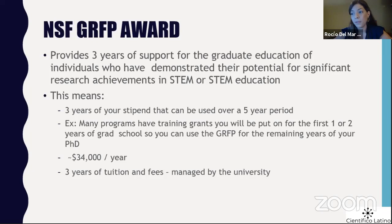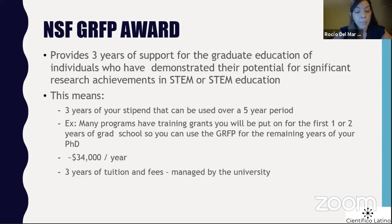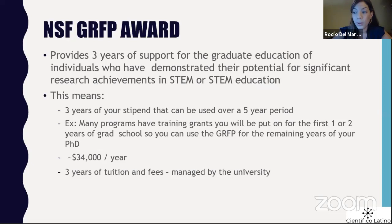The stipend for the NSF-GRFP is $34,000 a year. Depending on where you're doing grad school, that can be more or less than what your peers receive. Usually graduate schools match it — if $34,000 is less than what peers are receiving, they compensate you to be equal. Some institutions even give you a bonus for getting an external fellowship. For the three years you have funding, they also cover your tuition fees, which is all managed by the university.